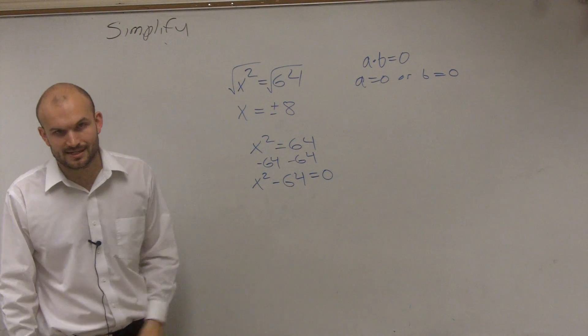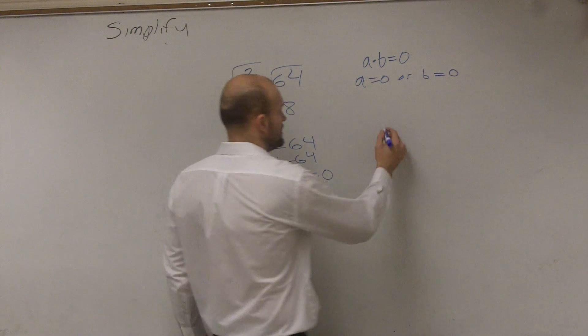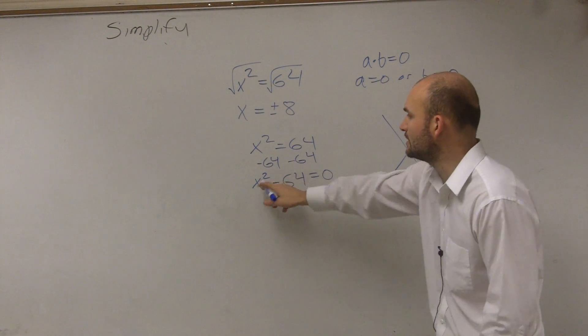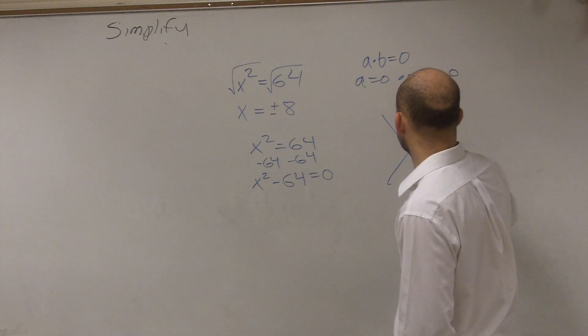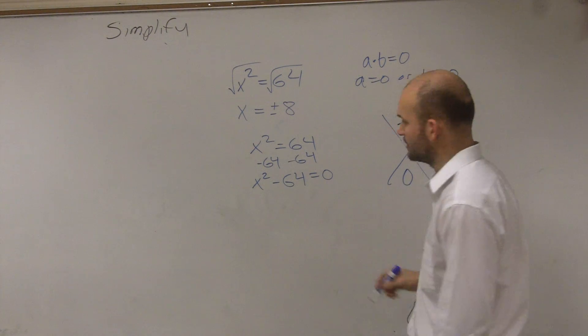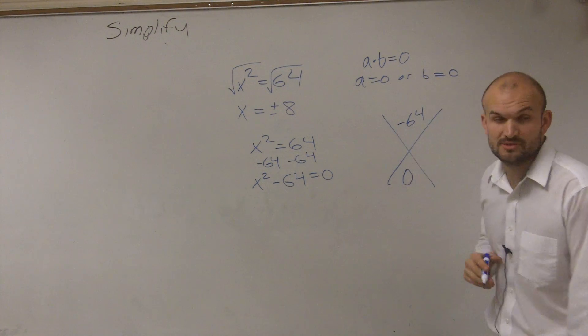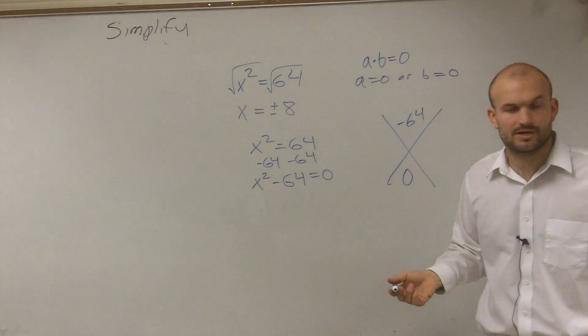Now, you can do the X method if you want to. What two numbers are 1 times -64 is -64 and zero, because there's no middle term. What two numbers multiply to give you -64, but then add to give you zero?